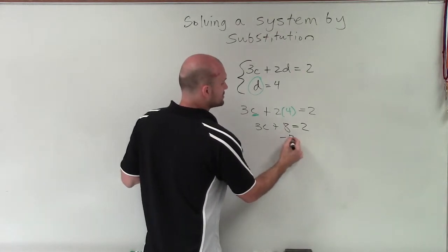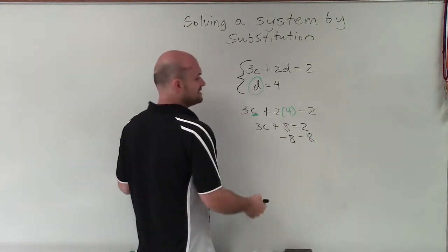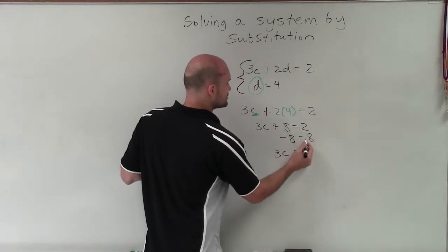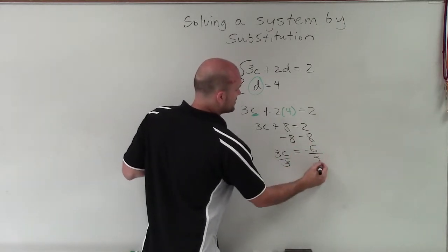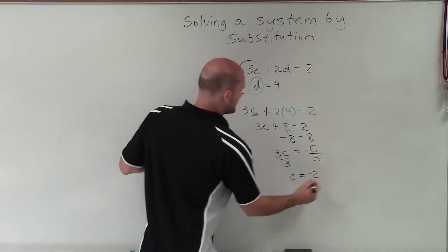Now I'll solve for my c by using inverse operations. So 3c equals 2 minus 8, which is negative 6. Divide by 3, c equals negative 2.